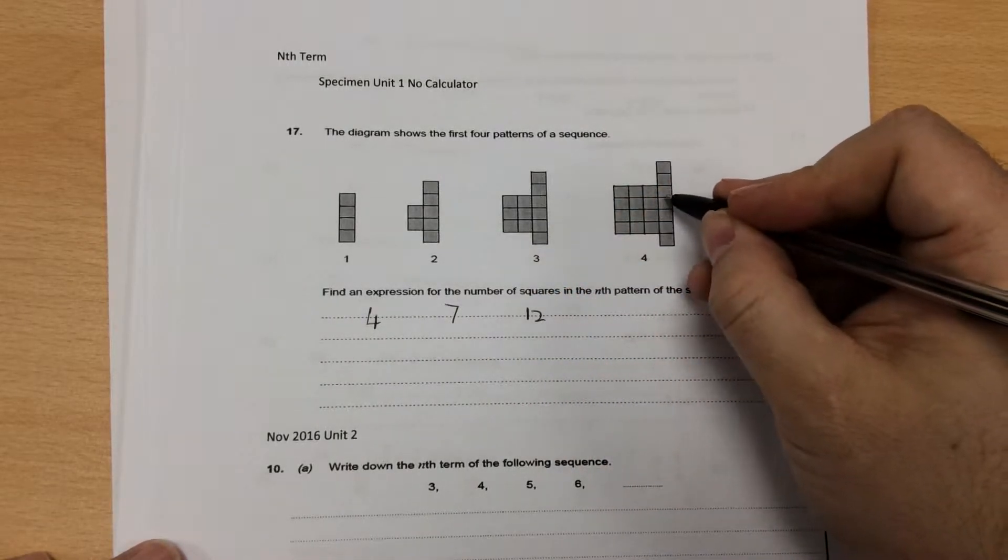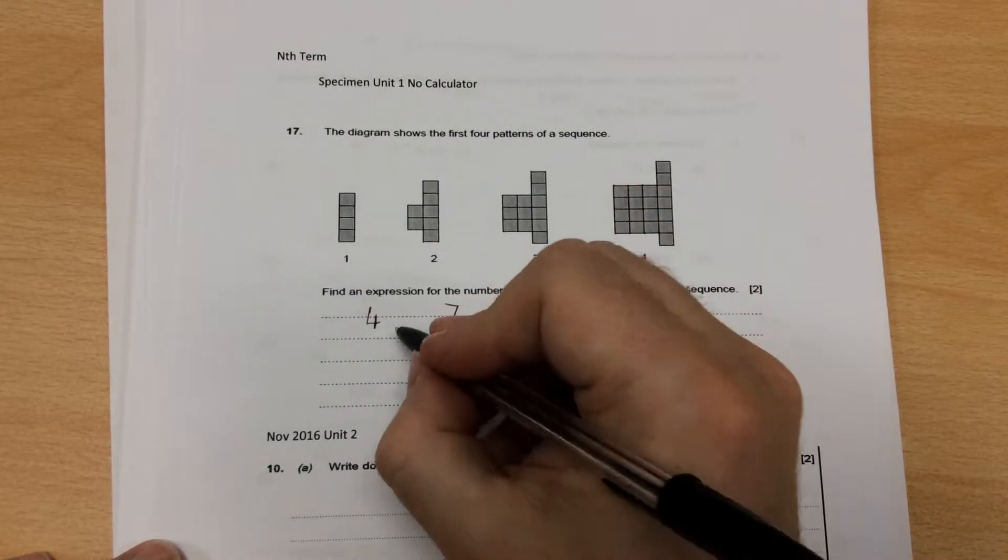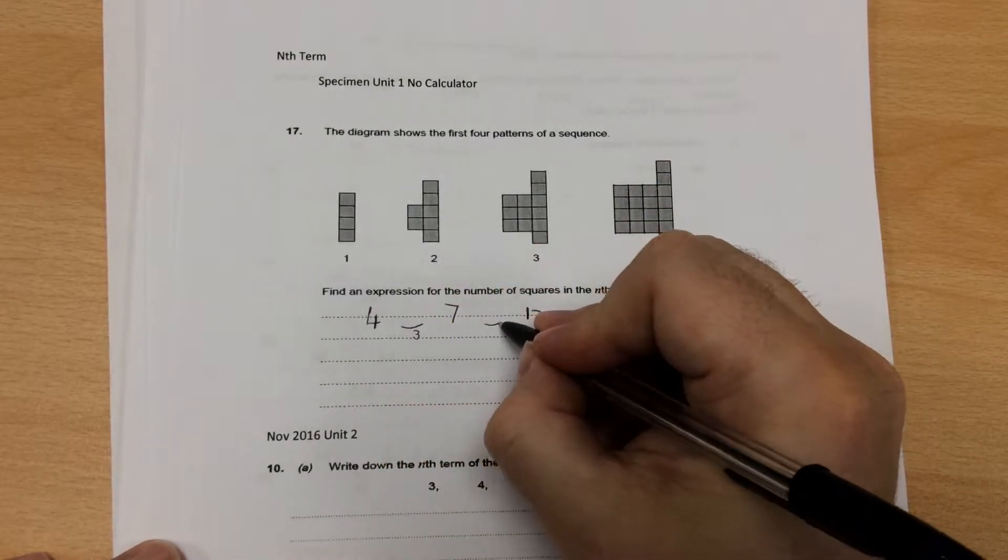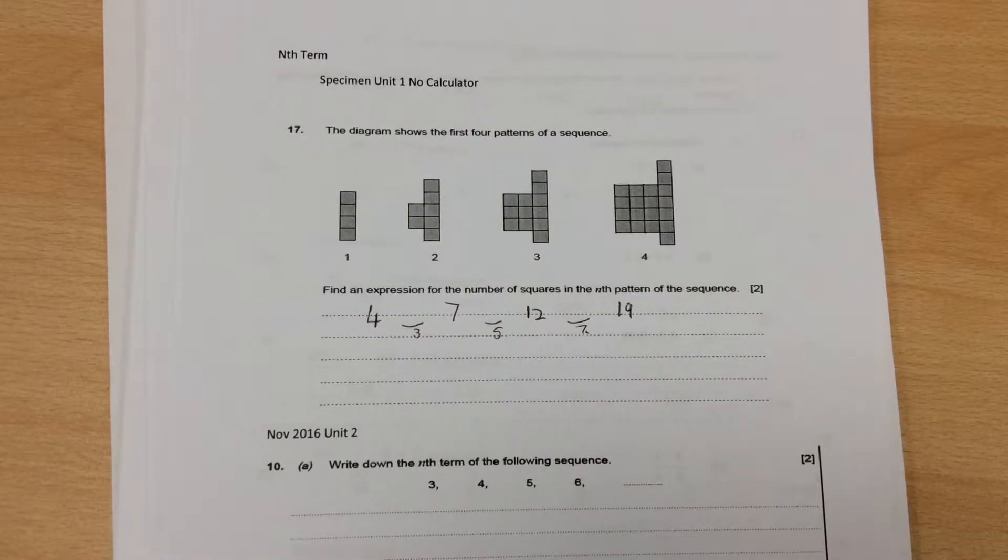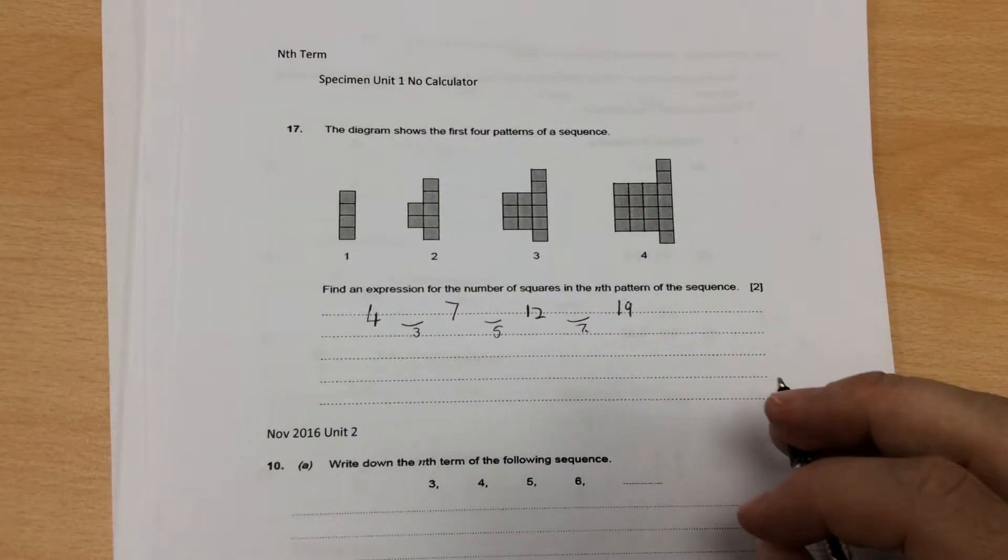seven in my second one, twelve in my third one, and nineteen in my fourth one. So it's going up in threes, fives, sevens. That's not going up by the same amount, so it's not a linear term. It's going to be a quadratic.